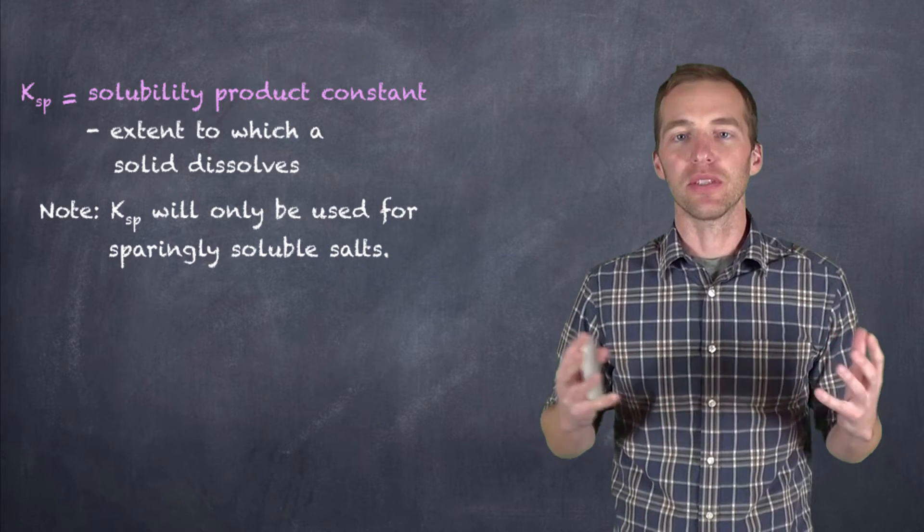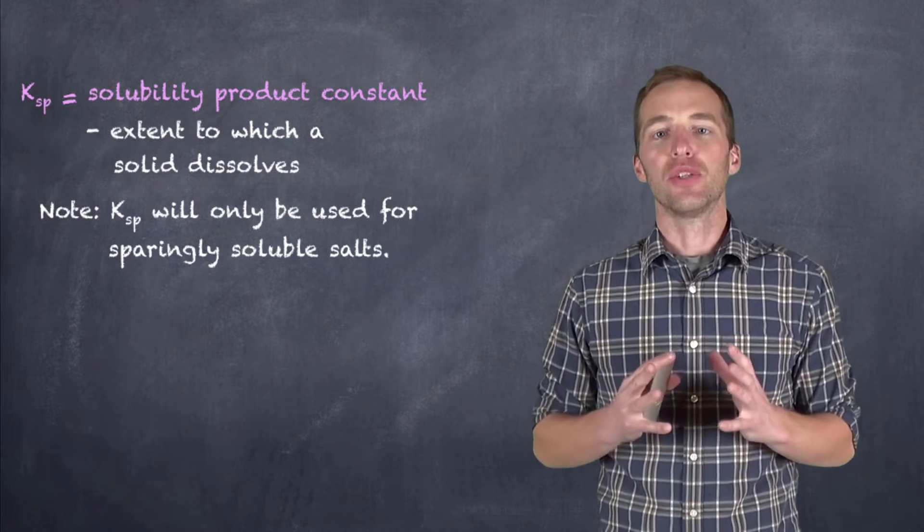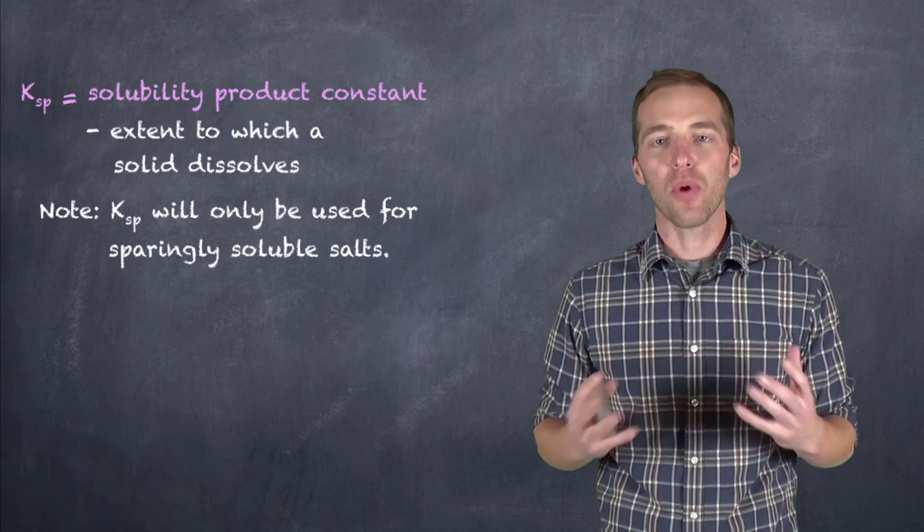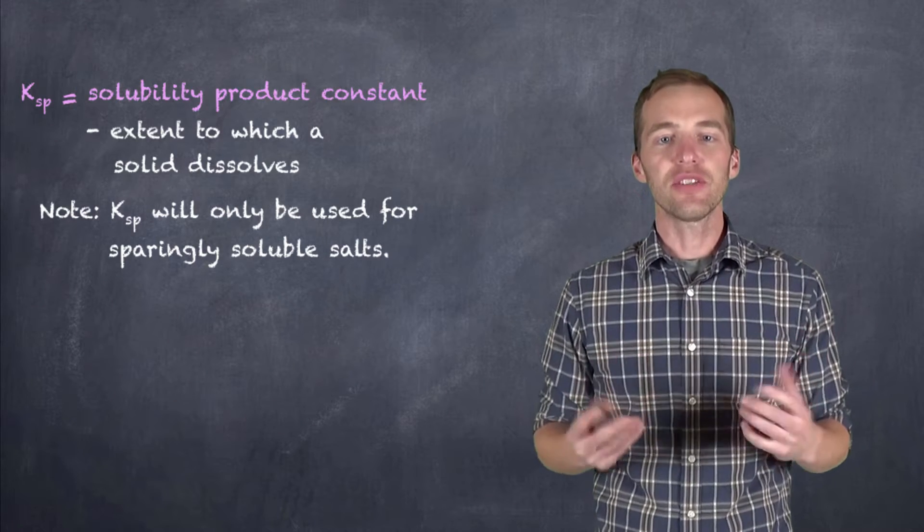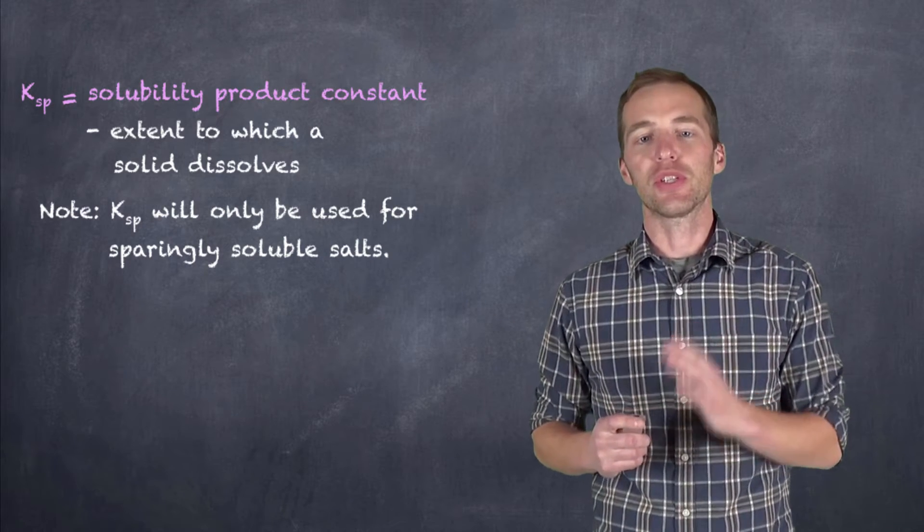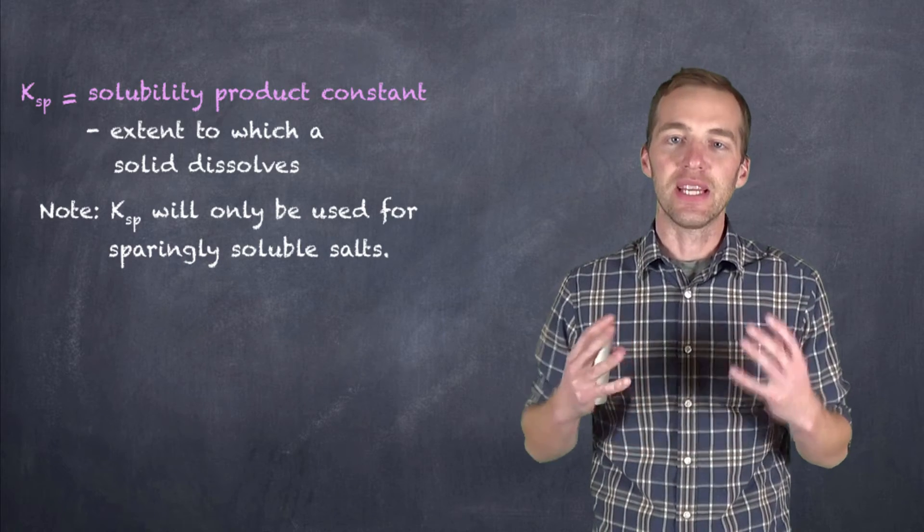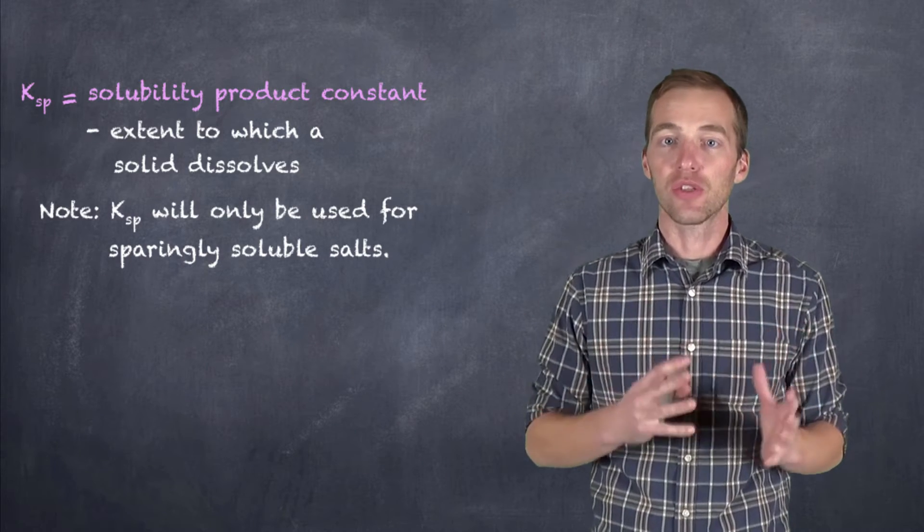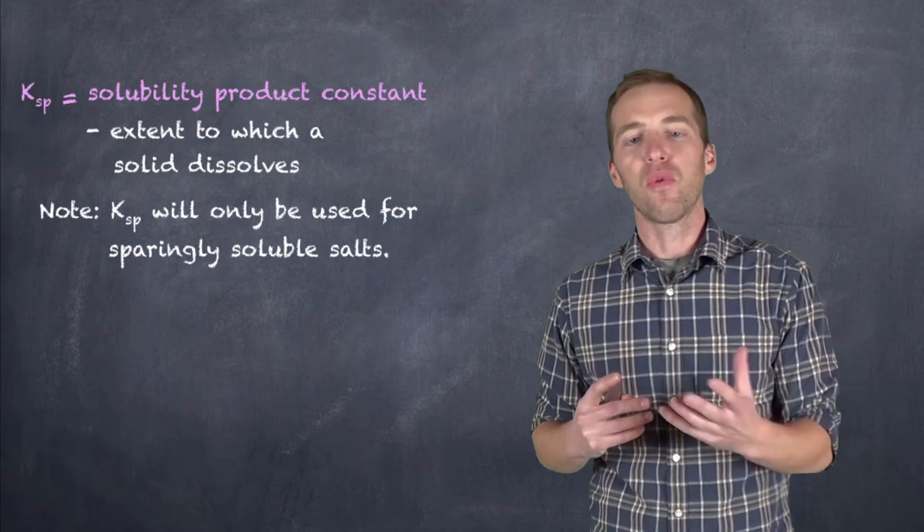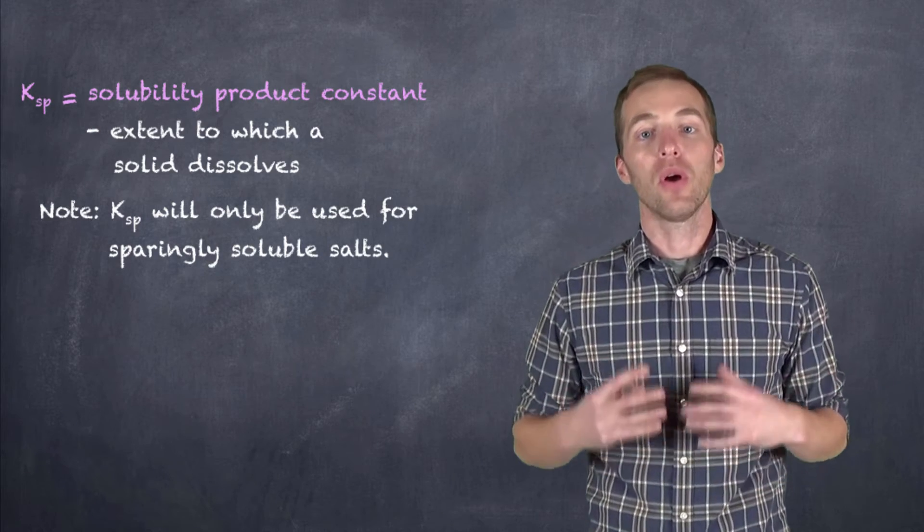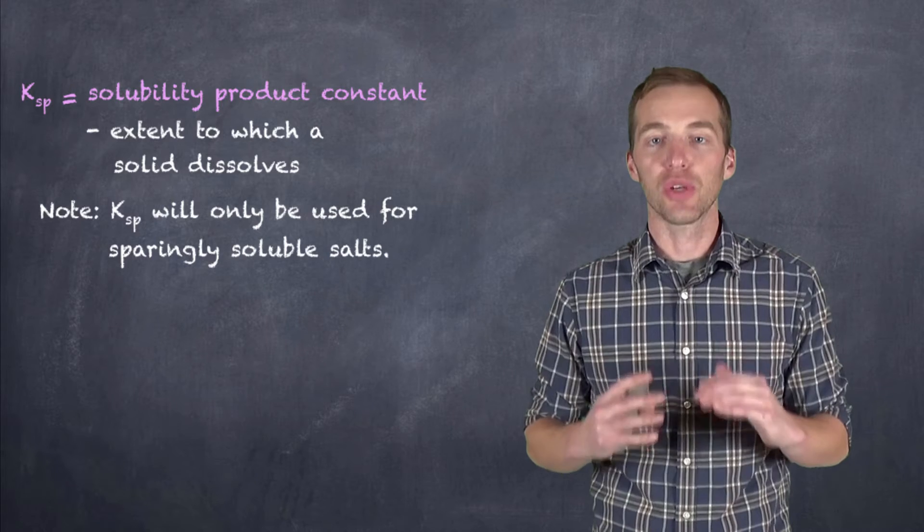Just as the other equilibrium constants gave us information as to what extent towards the reactants and products we're looking, this is going to give us an extent to which something dissolves. And an important note here is we're only going to be taking a look at the Ksp for sparingly soluble salts that have a low solubility.